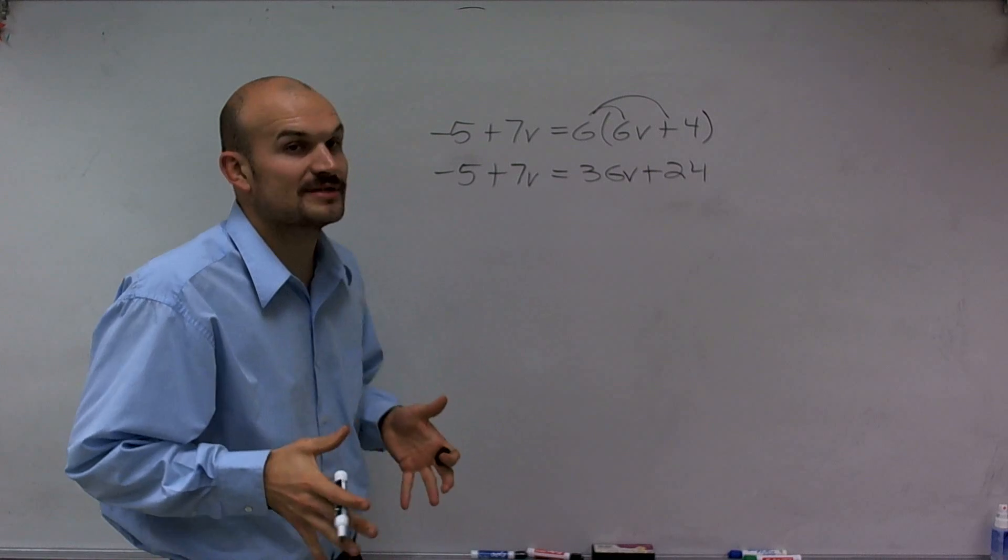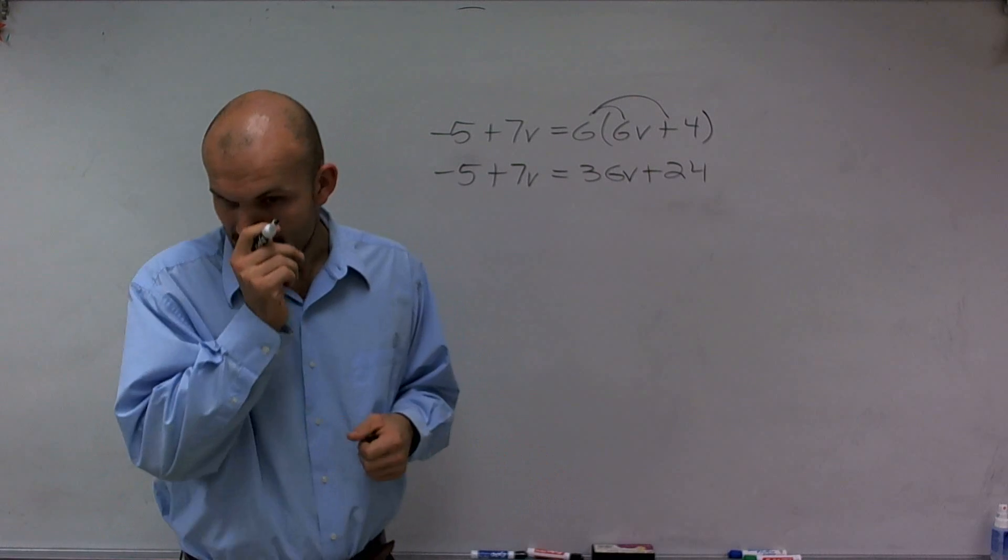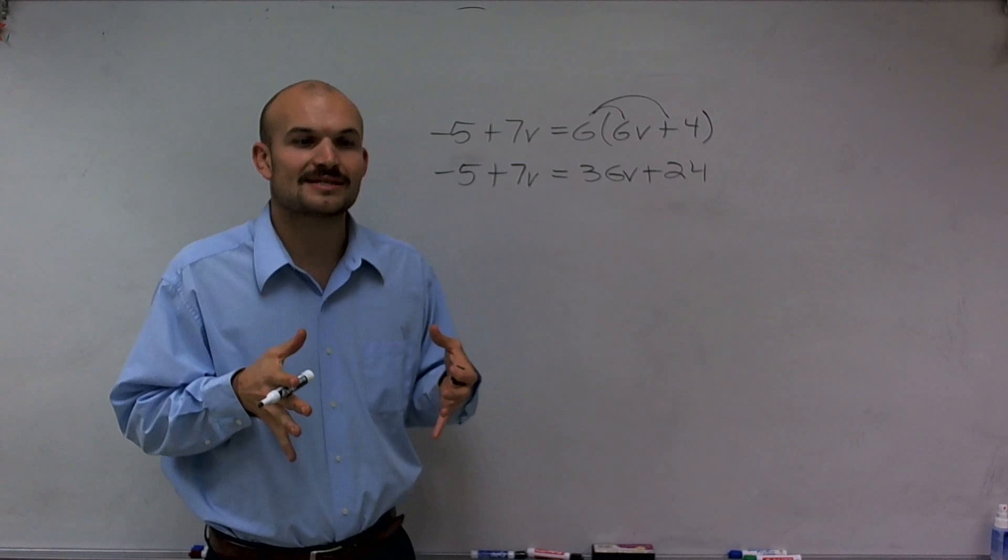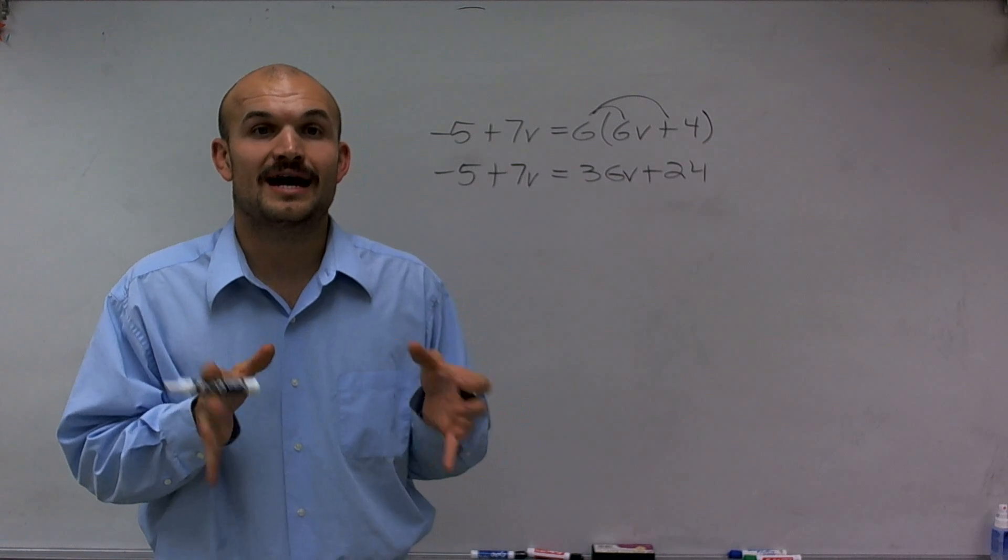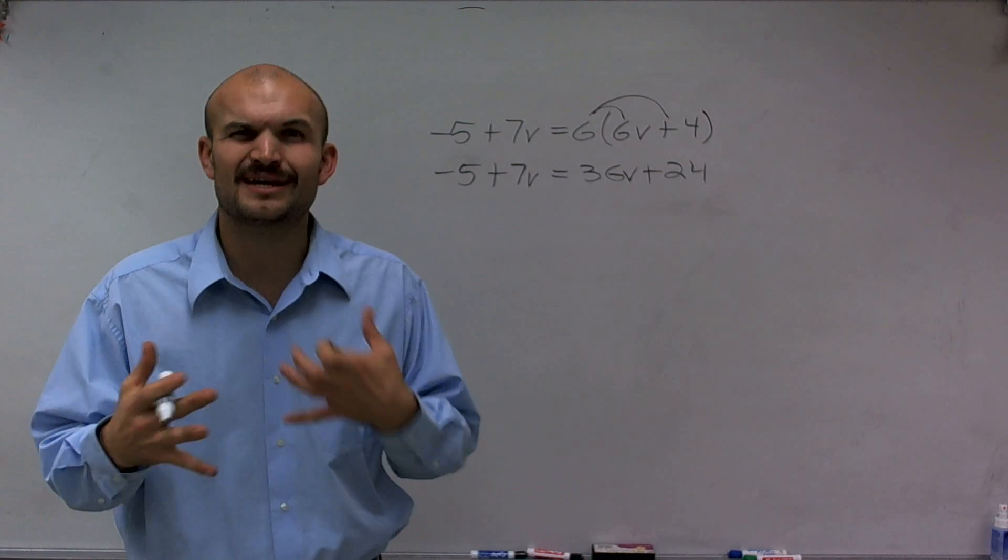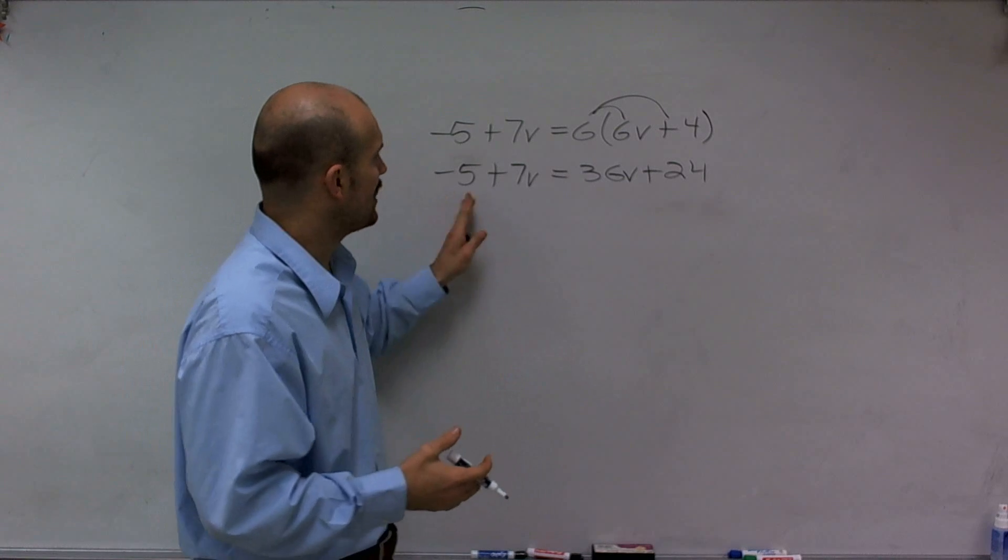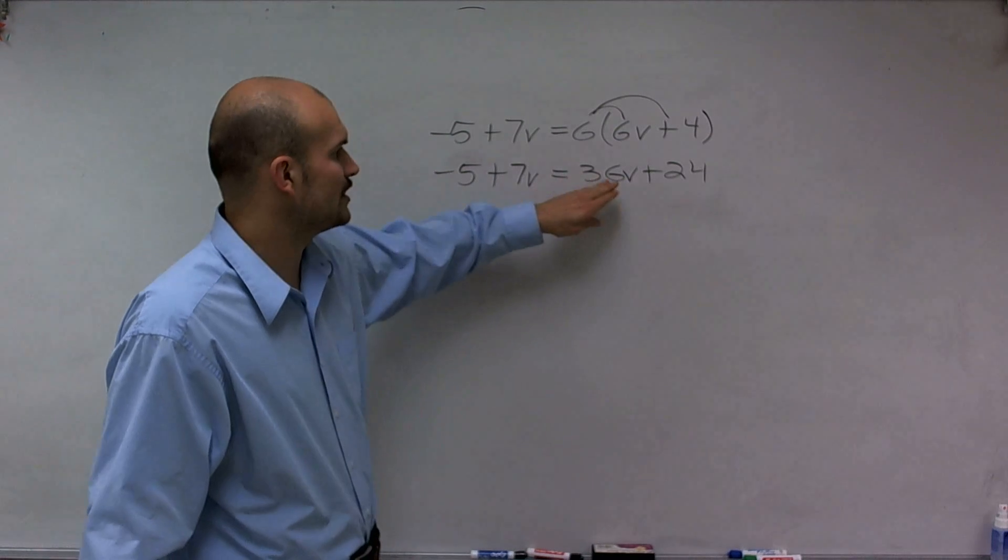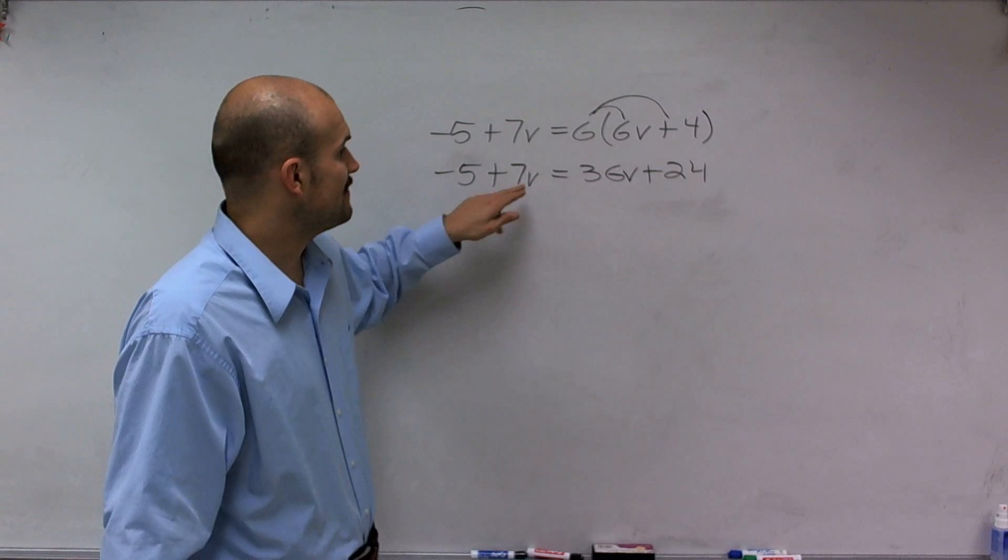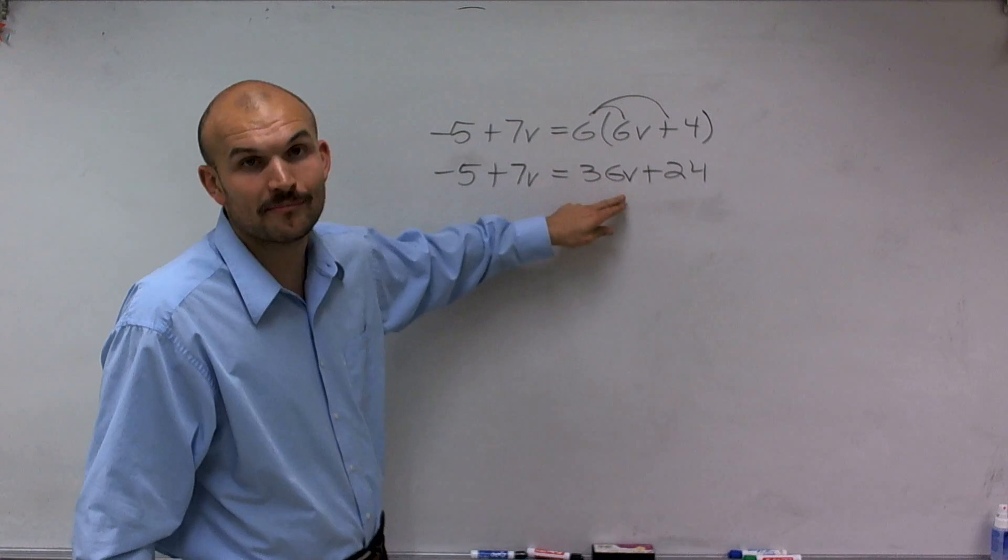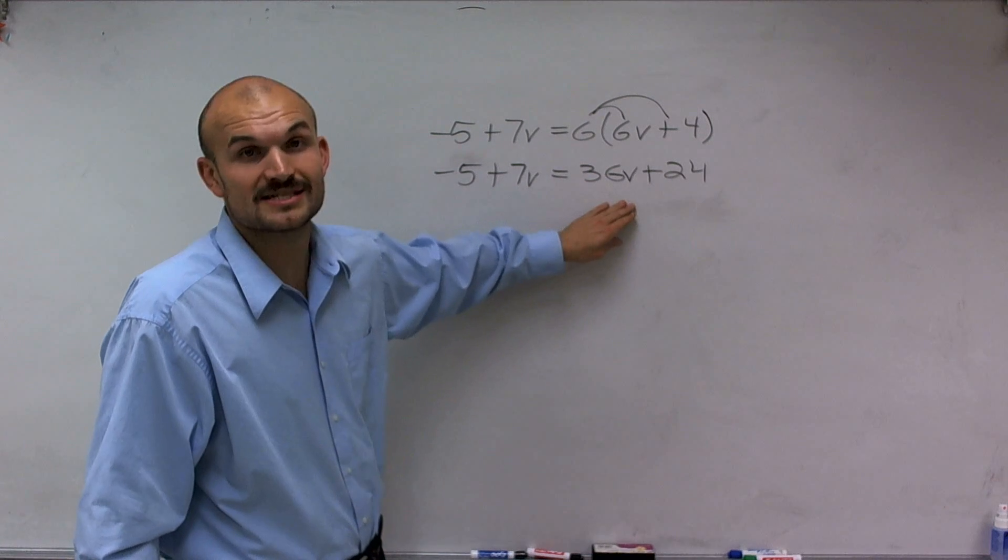So now the next thing I need to do is make sure I get my v's on the same side. What I always like to do is get the v's on the same side where it's going to be positive because I don't like dealing with negative numbers. So I notice that I have a positive 7v here and a positive 36v here. If I subtract 7v on both sides, my v will still be positive on the right side.